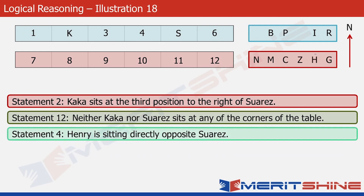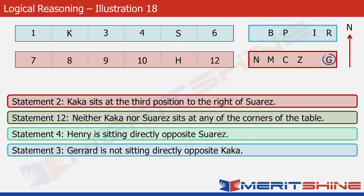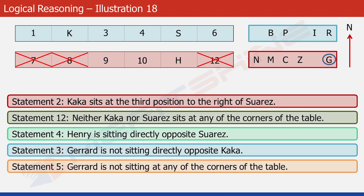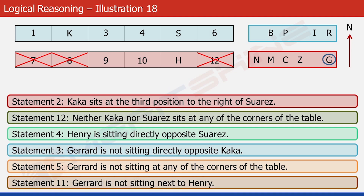Now let's look at statement 4: Henry is sitting directly opposite Suarez. Position 11 is directly opposite Suarez, so let's put Henry there. Now statement 3 says Gerard is not sitting directly opposite Kaka — position 8 is directly opposite Kaka, so that's ruled out for Gerard. Statement 5 says Gerard is not sitting at any of the corners — so positions 7 and 12 are eliminated. Statement 11 says Gerard is not sitting next to Henry — position 10 is next to Henry, so that's also ruled out. In the lower row, there's just one position left: number 9. So Gerard has to occupy position 9.